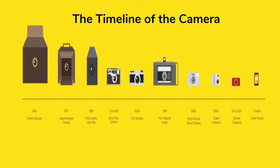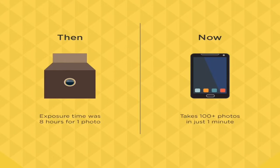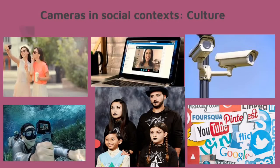The timeline of the camera shows dramatic progress: back then, exposure time was eight hours for just one photo, whereas smartphones today can take 100-plus photos in just one minute. When it comes to the culture of our society, cameras are a very important factor in our everyday lives. With the growing popularity of selfies, video chats, YouTube, photography, and social media platforms like Instagram and Snapchat, cameras are a significant part of our current generation, and the things we use cameras for only increases with time.